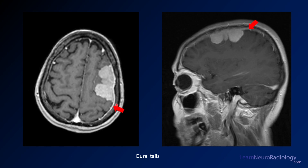Here are the post-contrast images. You see this avidly enhancing, pretty homogeneous mass with a broad dural attachment. There's a dural tail where you can see the cellular components of the tumor extending along the dura — that's one of the quintessential findings of meningioma. If you're looking at an extra-axial mass that's homogeneous and avidly enhancing, meningioma is really your top one, two, and three on the differential.